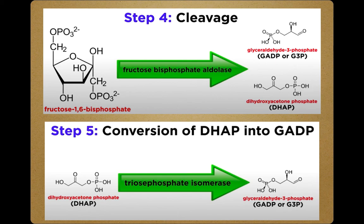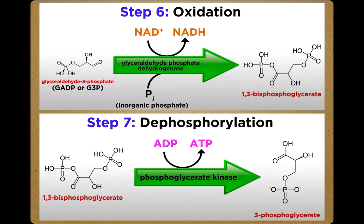Both three-carbon sugar molecules proceed through the second half of the pathway, and sufficient energy will be extracted to pay back the two ATP molecules used as an initial investment and produce a net profit of two additional ATP molecules and two higher-energy NADH molecules. The second half of glycolysis involves the energy-releasing steps, also called the payoff phase. Each GADP molecule is oxidized to become 1,3-bisphosphoglycerate, involving the enzyme glyceraldehyde-phosphate dehydrogenase, which requires NAD and a free inorganic phosphate. In the seventh step, catalyzed by phosphoglycerate kinase, 1,3-bisphosphoglycerate donates a high-energy phosphate to ADP, forming a molecule of ATP.